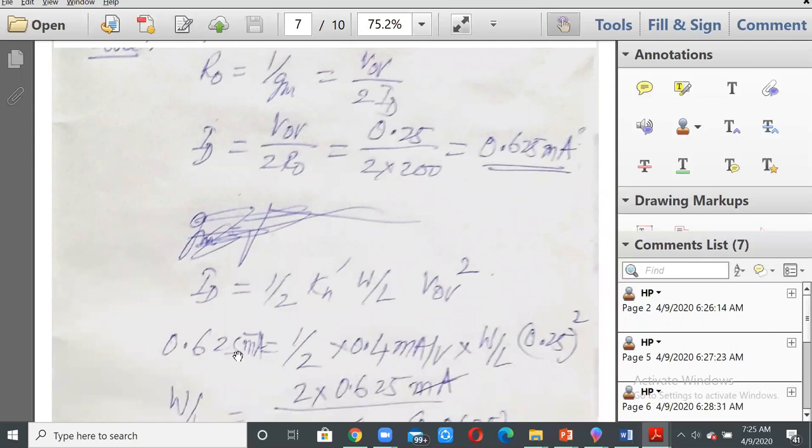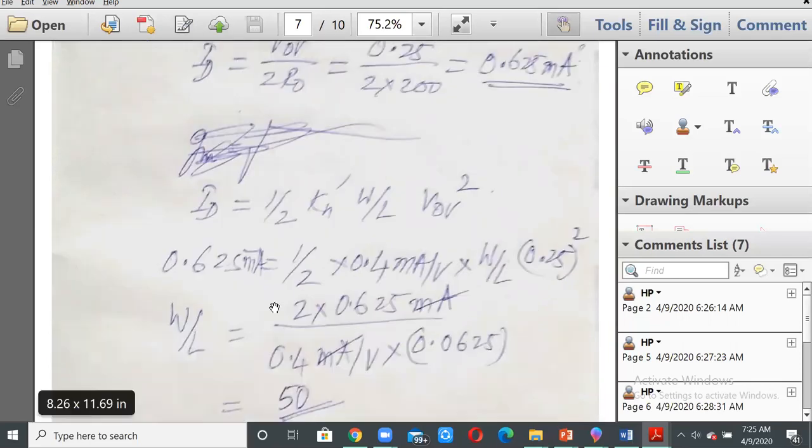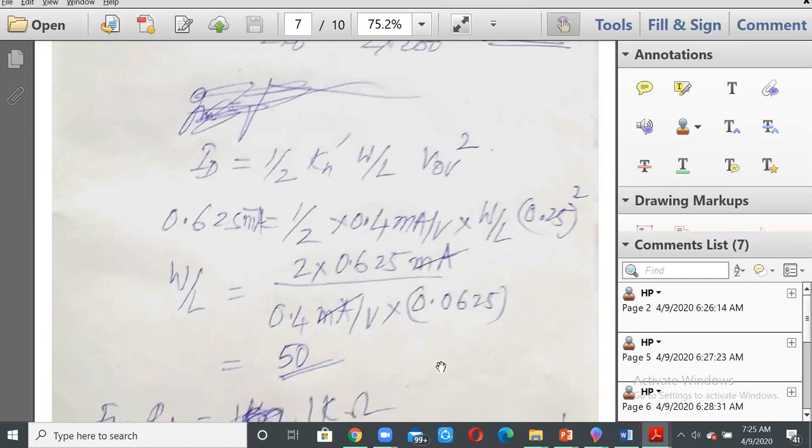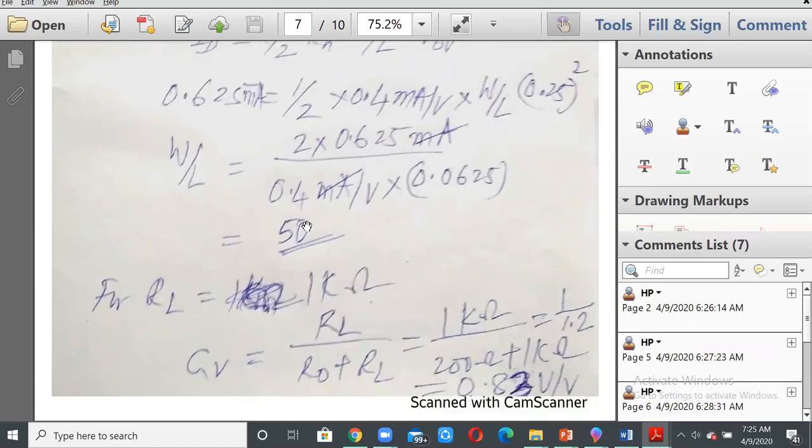You can substitute for ID, k prime, and VOV. Then W by L will be equal to twice of 0.625 divided by 0.4 and 0.25 squared, that will be 0.0625. So milliampere and milliampere will cancel and we are left with the W by L value of 50.